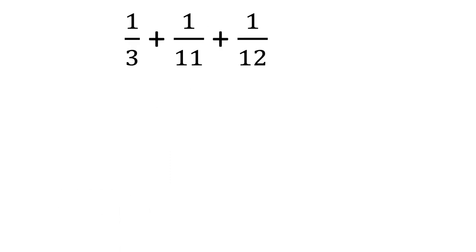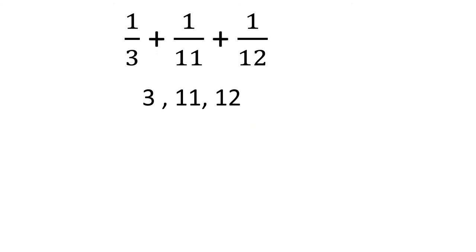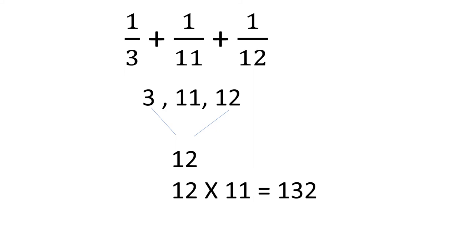Let us look at 3, 11, and 12. The highest is 12. 12 is divisible by 3, but not by 11. We increase: 24 ÷ 11 — not divisible. In this case we use another approach: take 3 and 12 first. The LCM of 3 and 12 is 12. Then simply multiply by 11: 12 × 11 = 132. So 132 is the LCM.